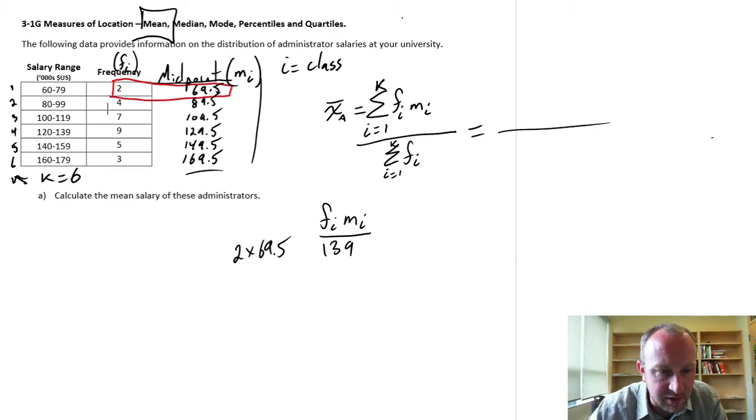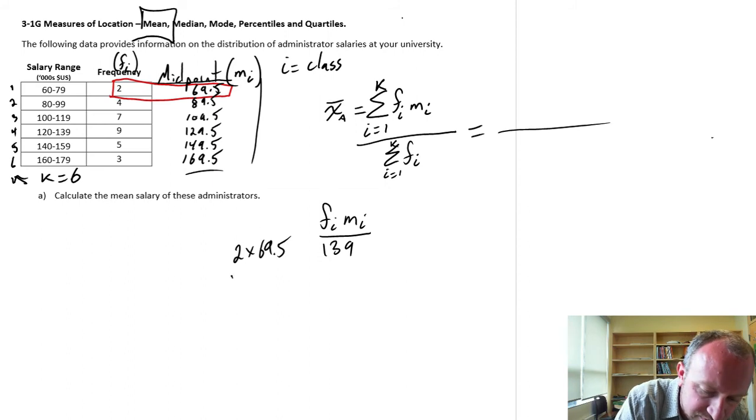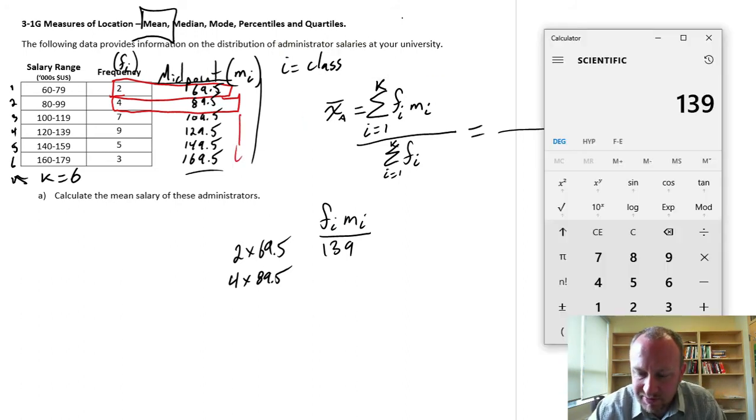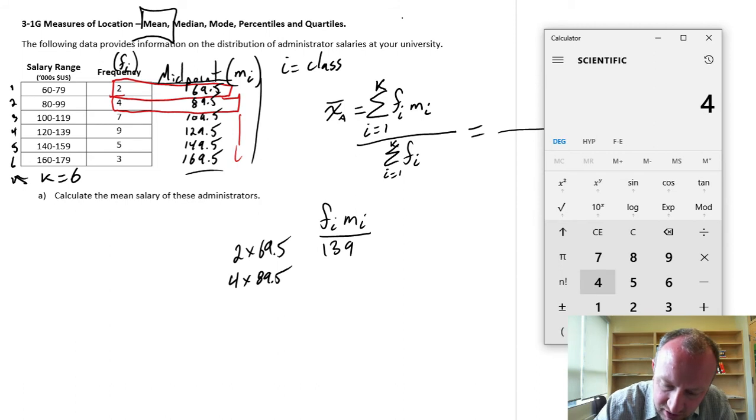The next one that I'm going to do is 4 times 89.5. So that's going to be this next class here. And then I'm just going to move and continue down, repeating those calculations. So this is 4 times 89.5, which is 358.